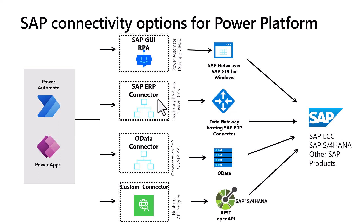Typically, we see customers using the ERP connector through a combination of a low-code user — someone building a Power App or a Power Virtual Agent bot — and someone familiar with the SAP system who knows how to go to SE37 to test a function module before passing the information to the Power Platform user, so both can work hand in hand.